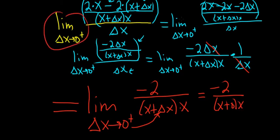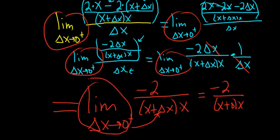So we get negative 2 over x plus 0 times x. Keep in mind, you always write that limit sign to the very end when you plug in the delta x. That's when you stop writing the limit sign. And we just get x times x, so it's x squared, negative 2 over x squared. And that's it.